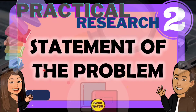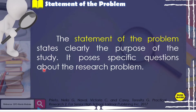Hello! In this video lesson, we will discuss how to present the written Statement of the Problem. The statement of the problem clearly states the purpose of the study. It poses specific questions about the research problem. Generally speaking, a research problem is a situation that needs a solution and for which there are possible solutions. If a situation has no possible solution, it makes little sense researching it. For example, if your problem is not wanting to grow old, there is no solution for that kind of problem. So our research problem should be something that needs a solution. So what does the Statement of the Problem look like?